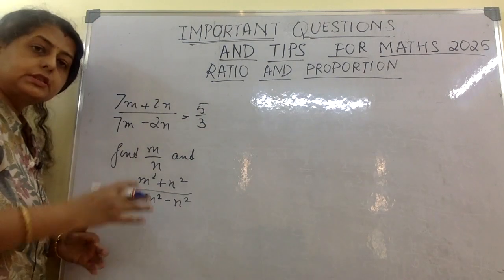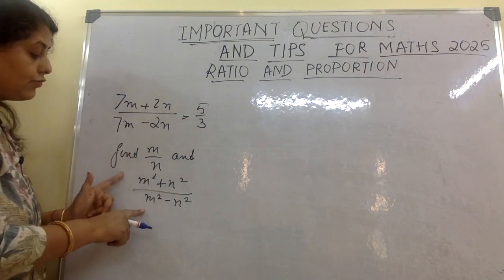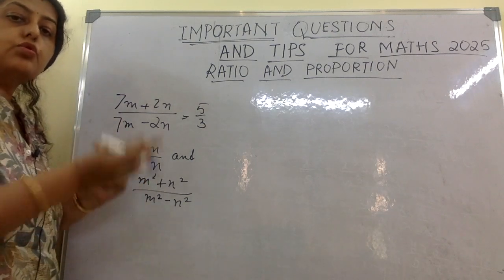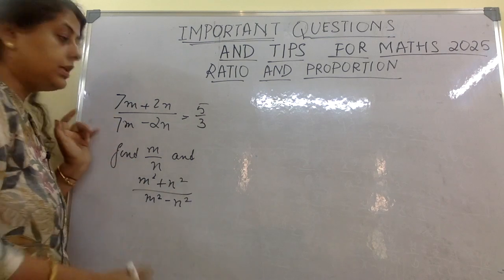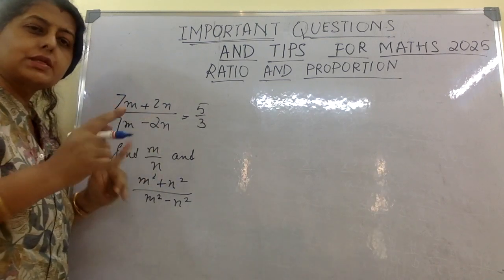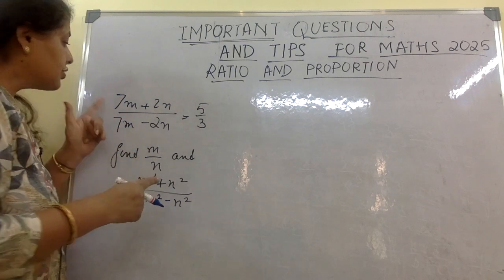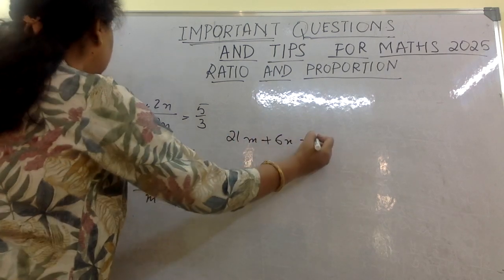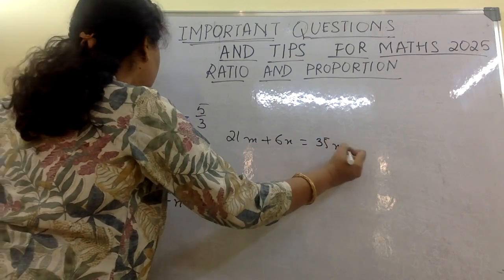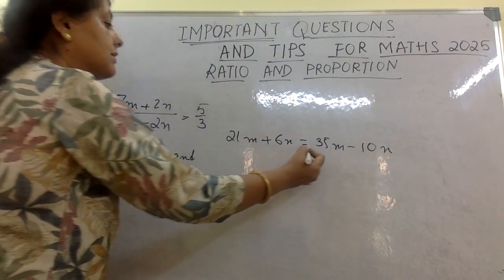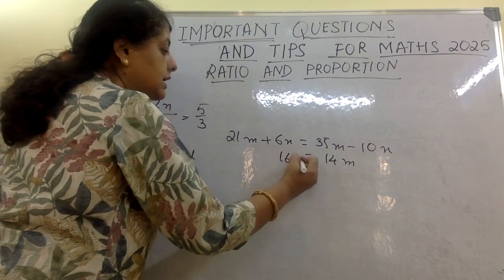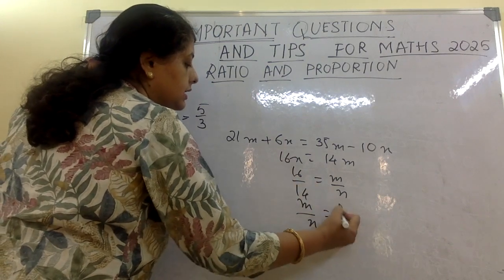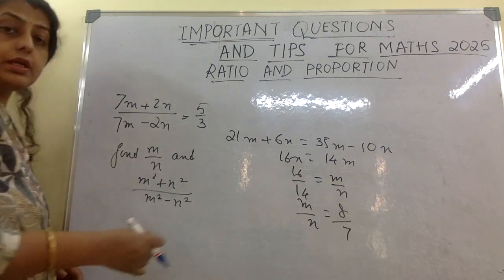Next important question: first find m/n, then find the value of the expression. When you see this type, go straight for a linear equation — no other method. Setting up the equation gives 21m + 6n = 35m − 10n. Bringing m's to one side: 14m = 16n, so m/n = 16/14 = 8/7.